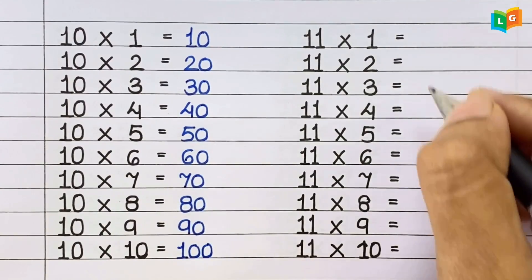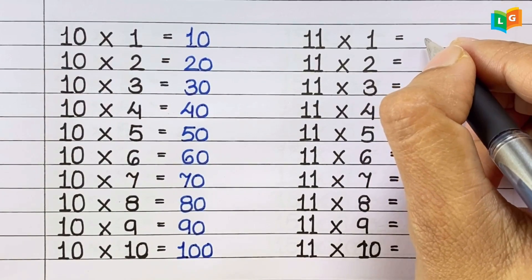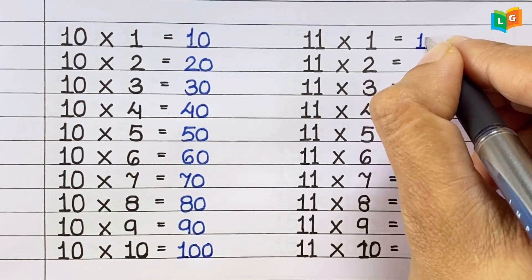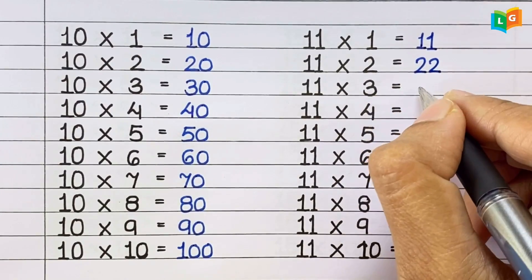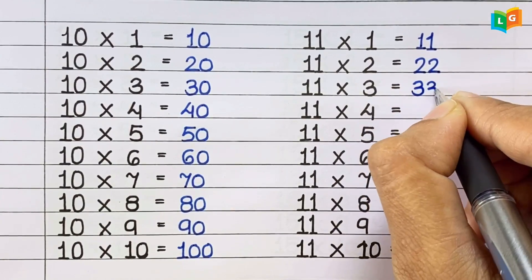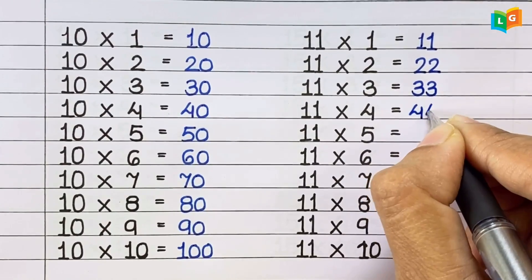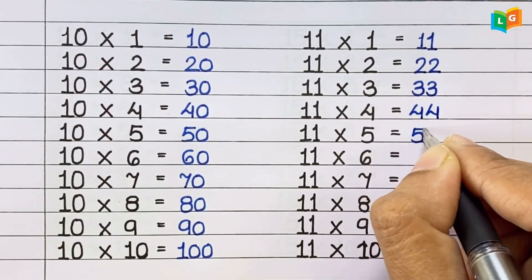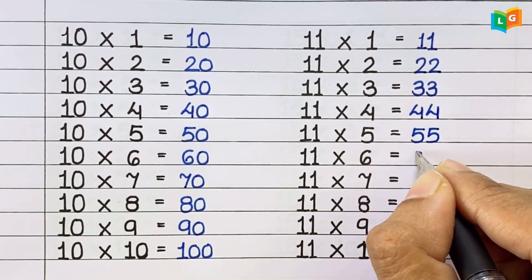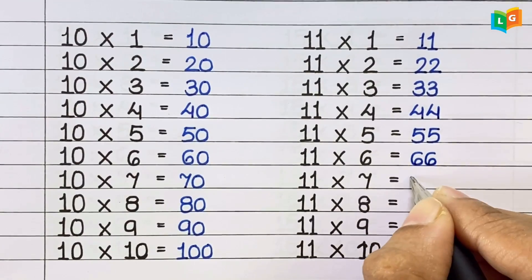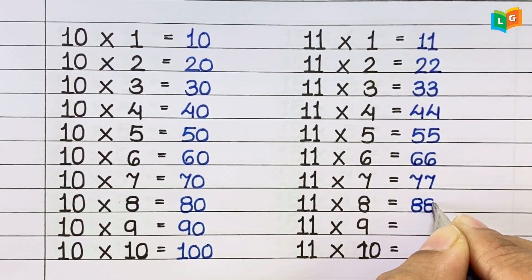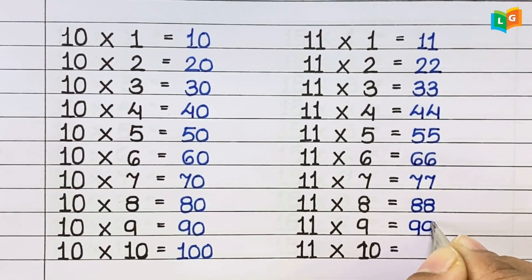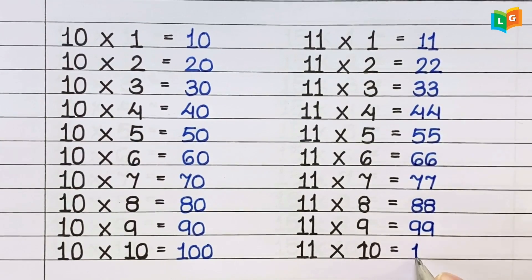Now let's see table of 11. 11 1s are 11, 11 2s are 22, 11 3s are 33, 11 4s are 44, 11 5s are 55, 11 6s are 66, 11 7s are 77, 11 8s are 88, 11 9s are 99, 11 10s are 110.